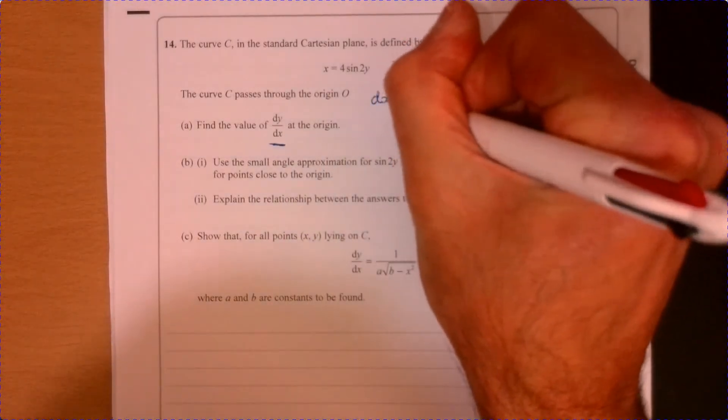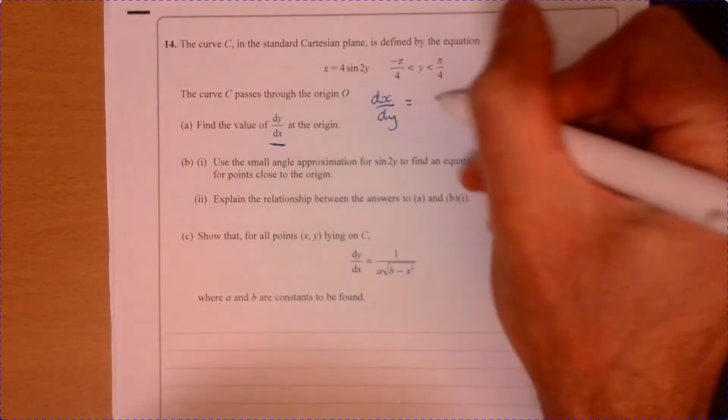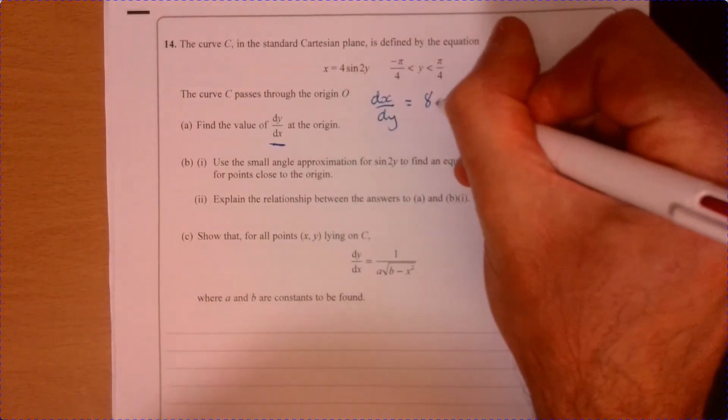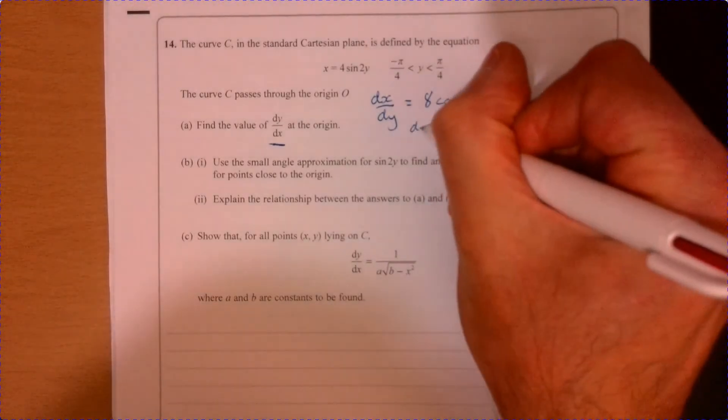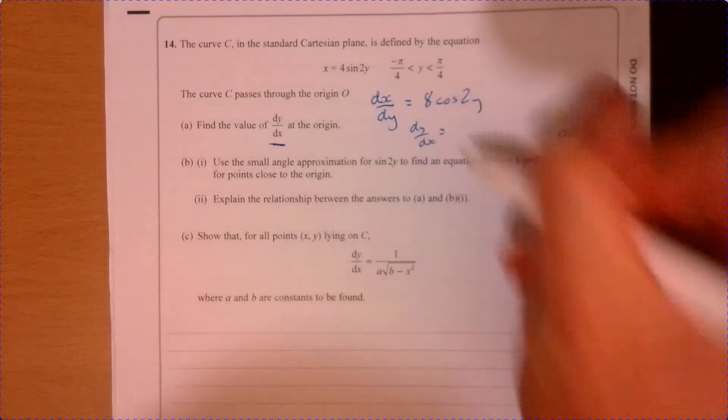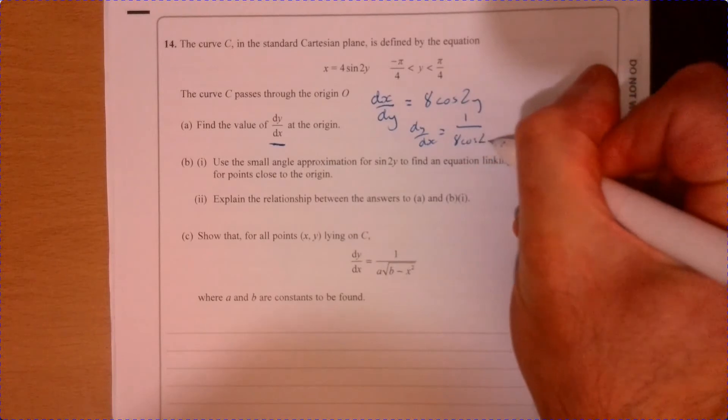I can easily write down dx over dy, looking at this. So that's just going to be 8 cos 2y. And then, so dy over dx is simply 1 over 8 cos 2y.